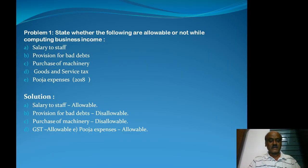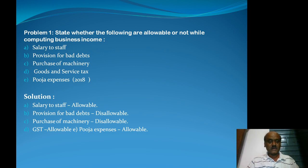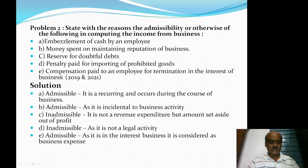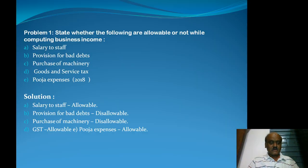The first problem: state whether the following are allowable or not while computing income from business. First one is salary to staff, second one is provision for bad debts, then purchase of machinery, goods and service tax, and puja expenses. These five items are to be classified as allowable or disallowable.